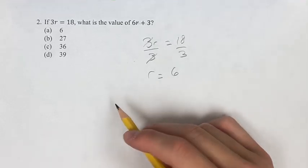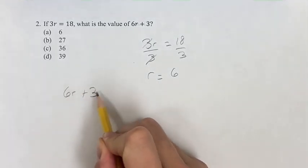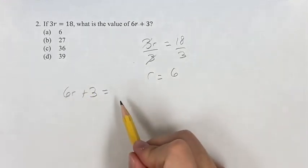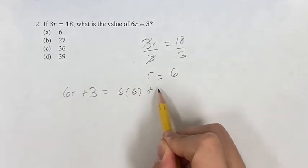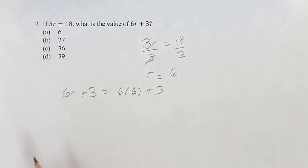So the value of r is 6, therefore 6r plus 3, which is what we're trying to find, is 6 times 6 plus 3. We're plugging in 6 wherever we see r.